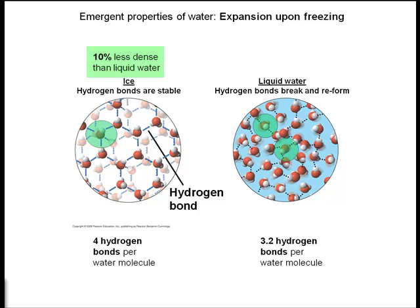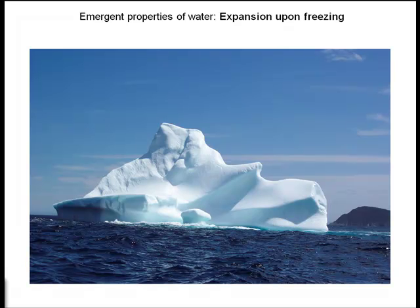Now if you think about it, the four bonds in ice create more space between the molecules and that space becomes filled with air and the ice becomes less dense, whereas in liquid water the molecules can pack closer together and become more dense, and this is why ice will float on water.